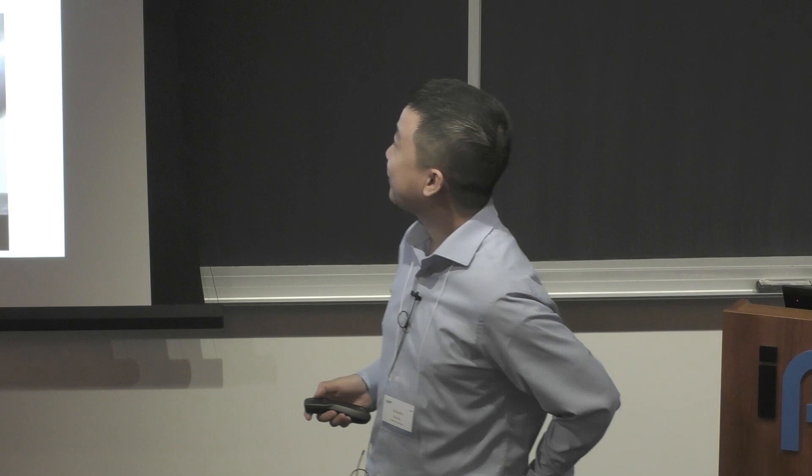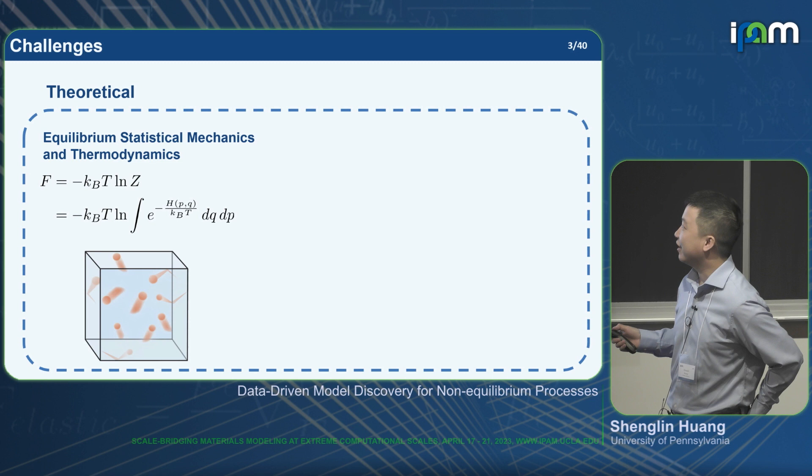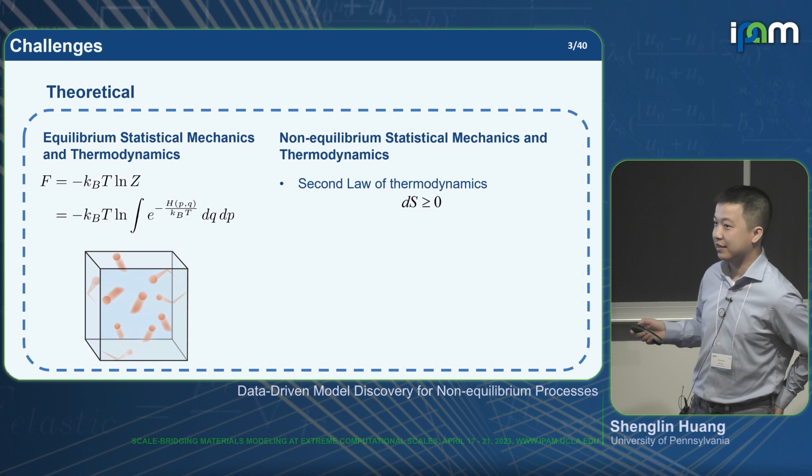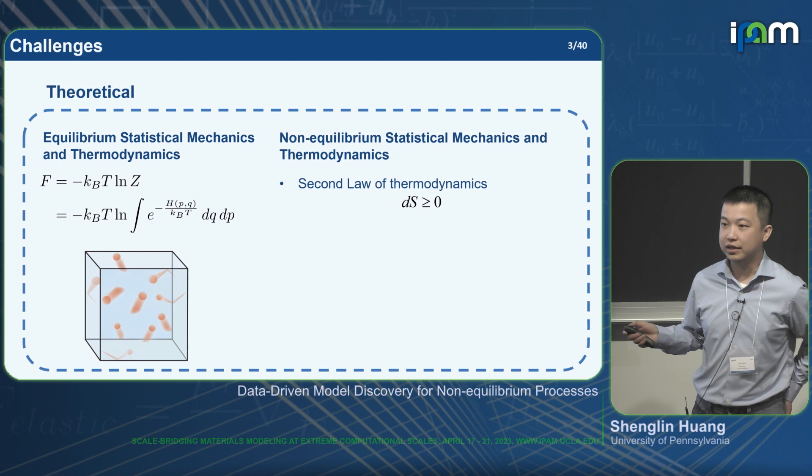How to understand these systems is still challenging. Theoretically, we have the well-established equilibrium thermodynamics and statistical mechanics developed over 100 years. However, for non-equilibrium processes, things are very different. The only well-accepted law is the second law of thermodynamics.